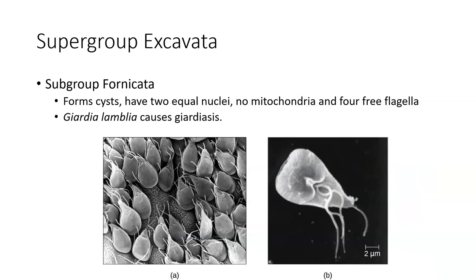In the table for the protists, the first supergroup is Excavata. The first subgroup, Fornicata, is unique in that instead of having a micro and macro nucleus like some other groups, or just one nucleus, these have two nuclei that are equal in size. They don't have mitochondria, so they don't make their own energy — instead they tend to steal energy from somebody else. They usually have four flagella floating outside the cell. Giardia lamblia is the example for this group.